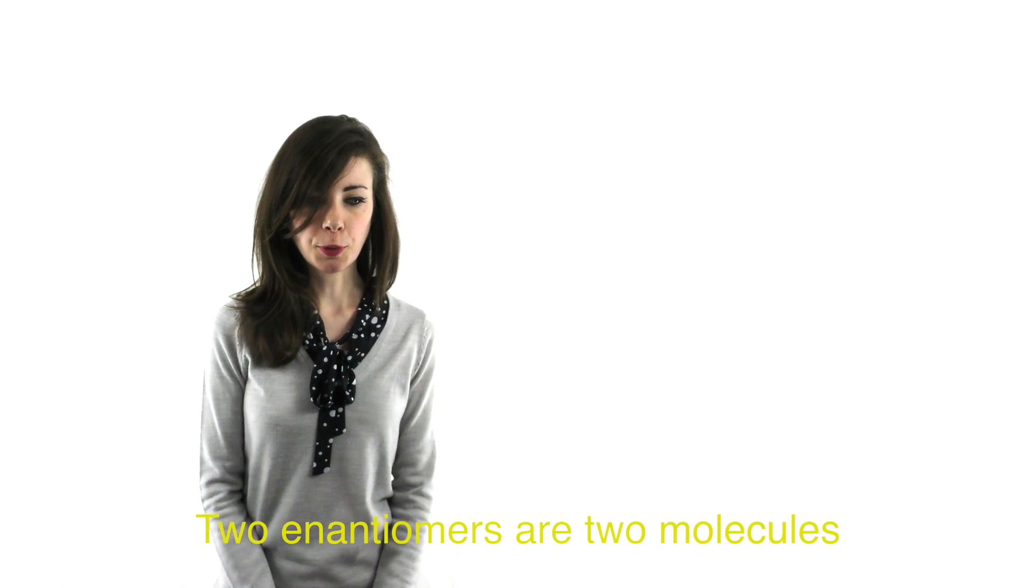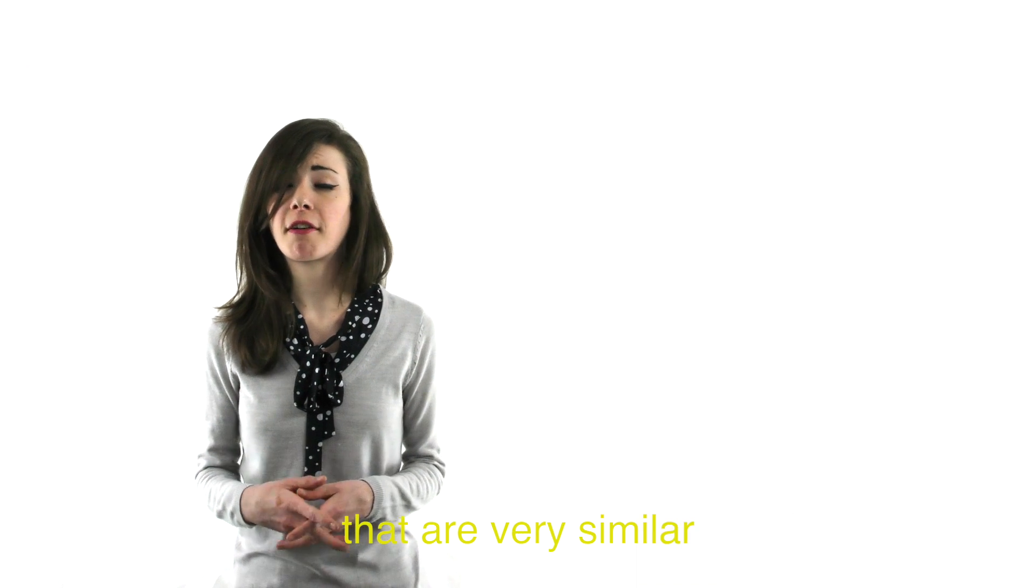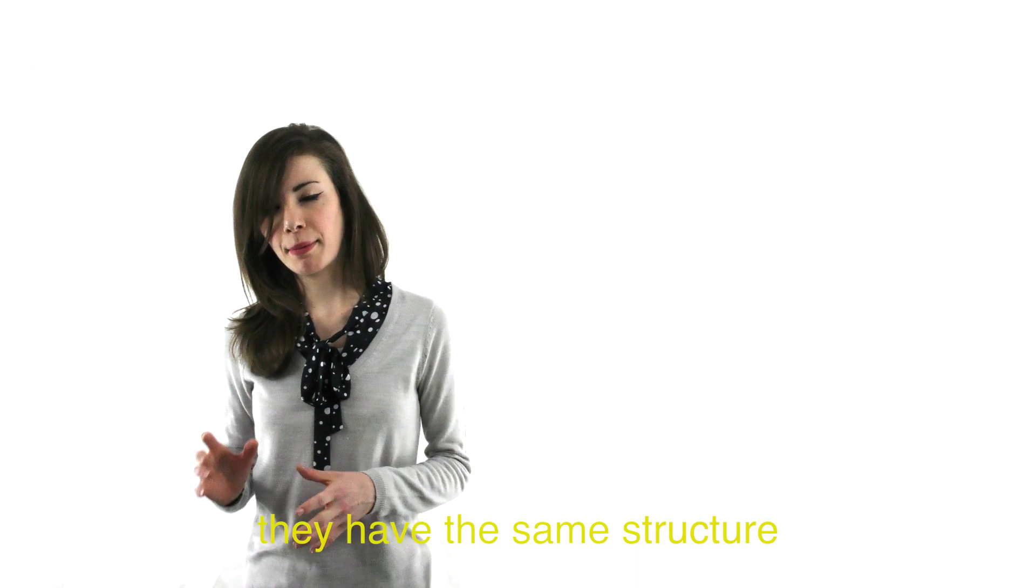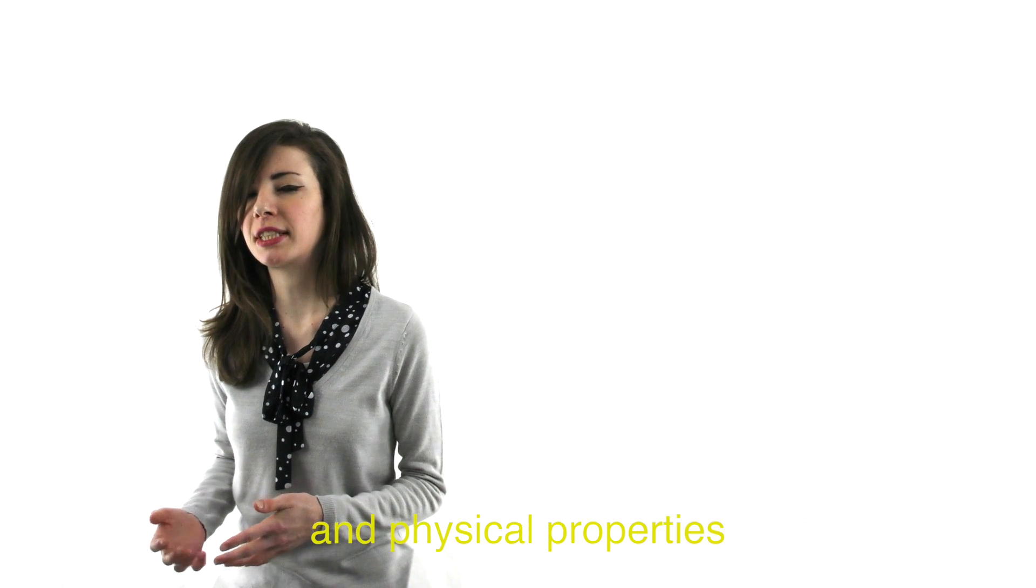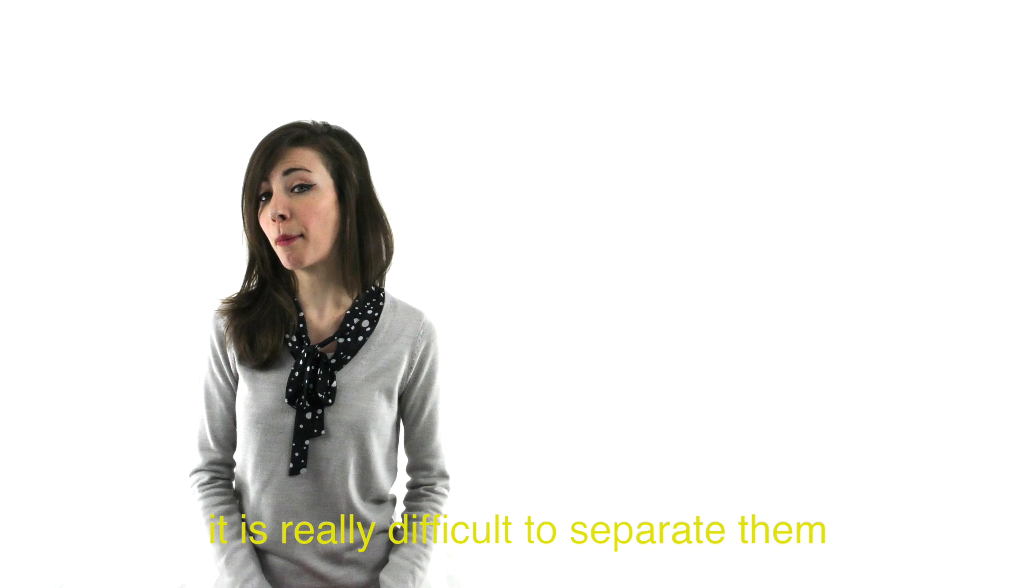Two enantiomers are two molecules that are very similar. They have the same structure and so they have the same chemical and physical properties, which explains why it is really difficult to separate them.